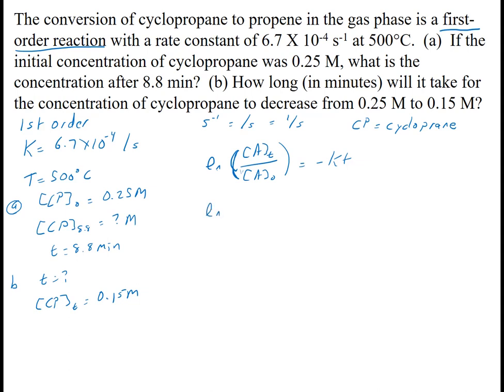So it's the natural log of the concentration at time T over 0.25 is negative 6.7 times 10 to the minus 4th. Now notice that this is in seconds and this is in minutes. So I need to fix this by multiplying by 60. And when I do that, I get 528 seconds. So this times 528.